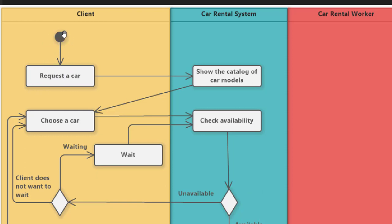First of all, a client requests a car. The car rental system then shows the catalog of car models — it shows the cars to the client. Then the client chooses a car.